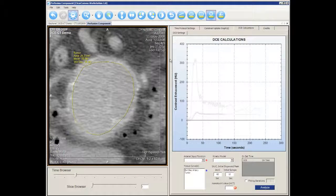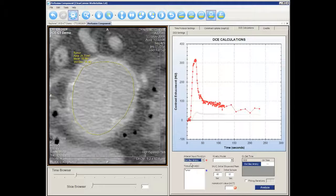Select the external iliac artery for the arterial input function. Then select the tumor for analysis. We can analyze more than one tissue region of interest if needed.